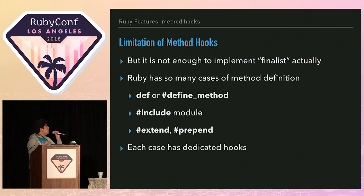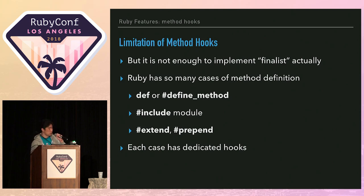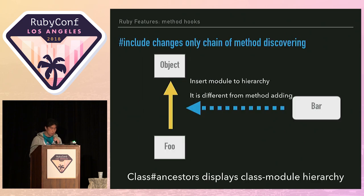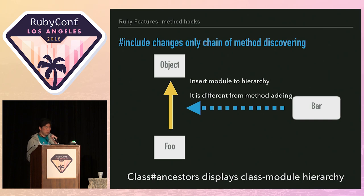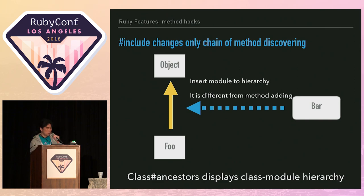Why? Ruby has so many cases of method definition — def, define_method, include, extend, prepend — and each case calls dedicated hooks. Because include only changes the chain of method lookup. When a Ruby program includes a module, the Ruby interpreter inserts the module into the hierarchy of method lookup. It's different from adding a method.